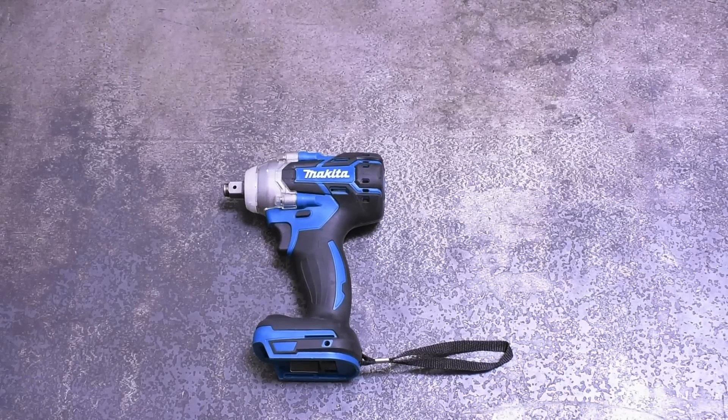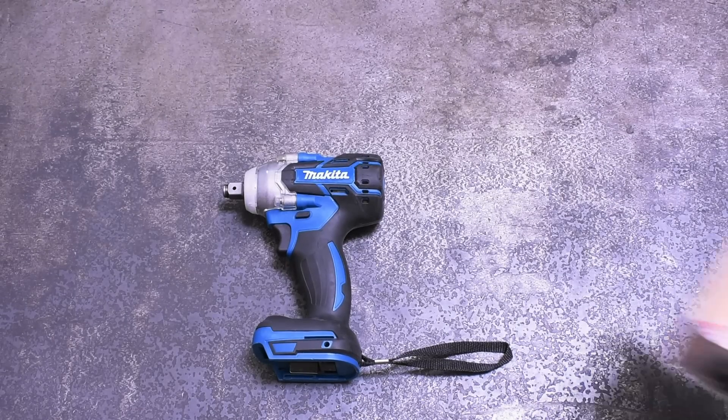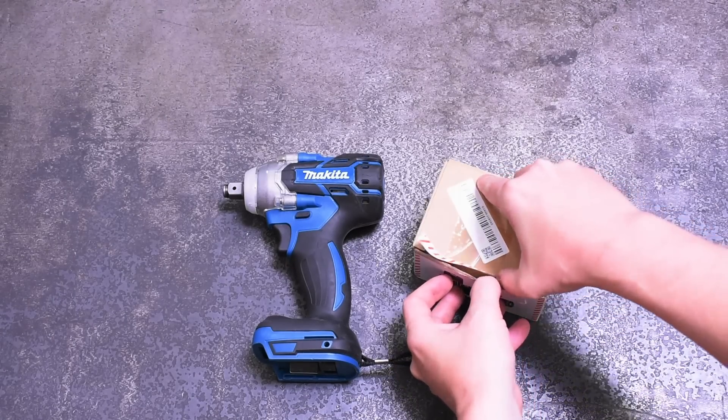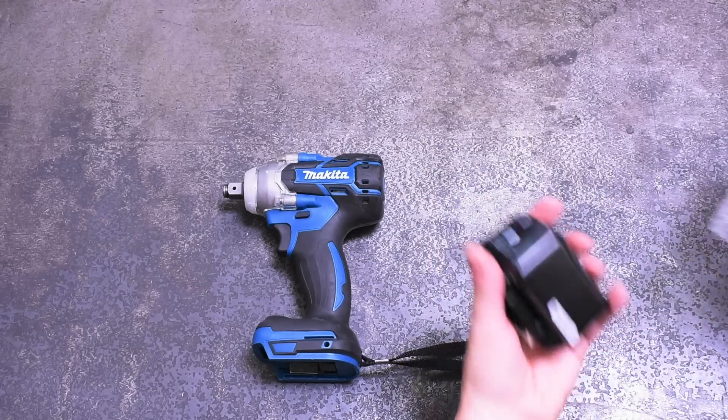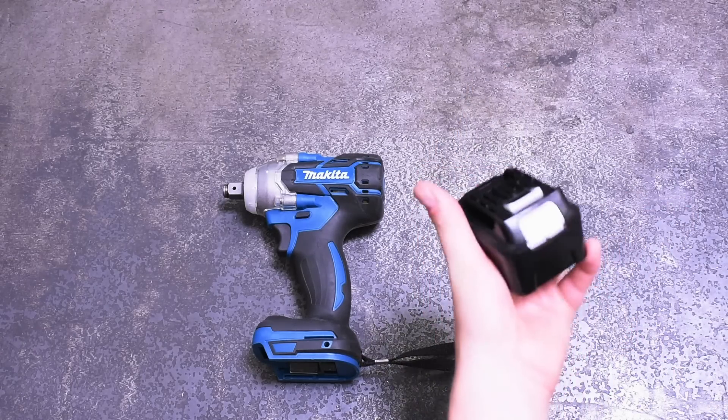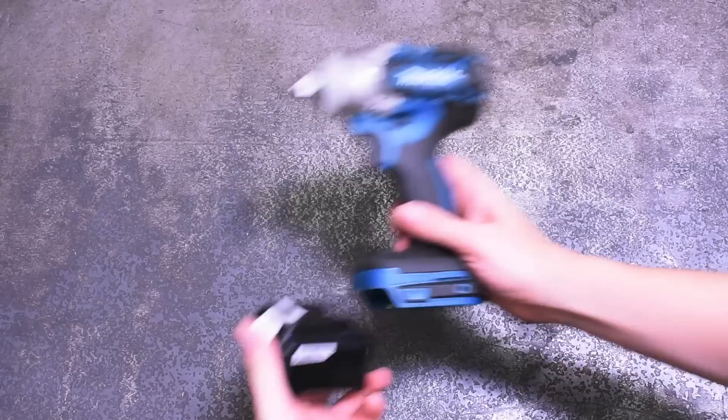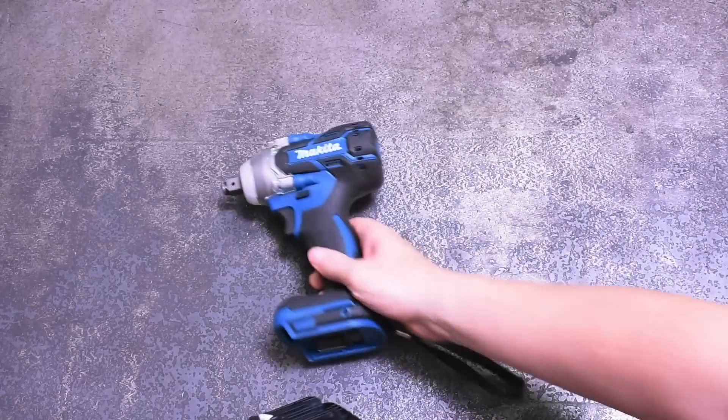In order to help this Wish deliver the wallop it advertises, we also bought both the cheapest and most expensive largest capacity quote-unquote Makita batteries we could find on eBay. While we did purchase 18 volt in both of those cases, the cheap one showed up as a 12 volt battery, so that's a bummer.